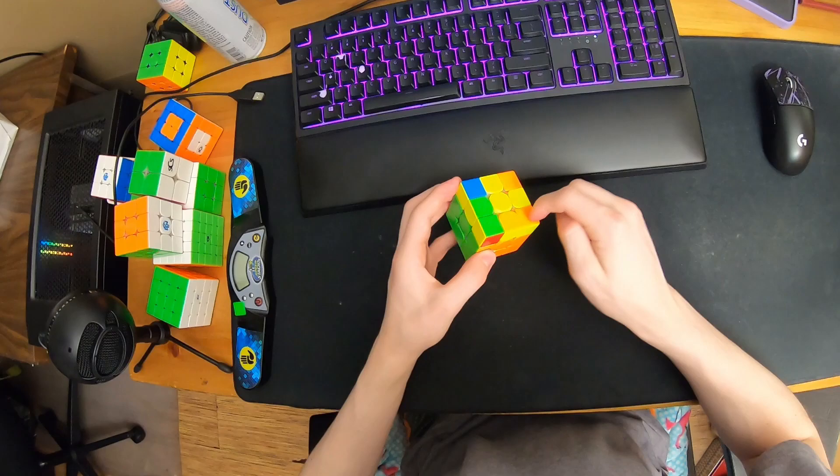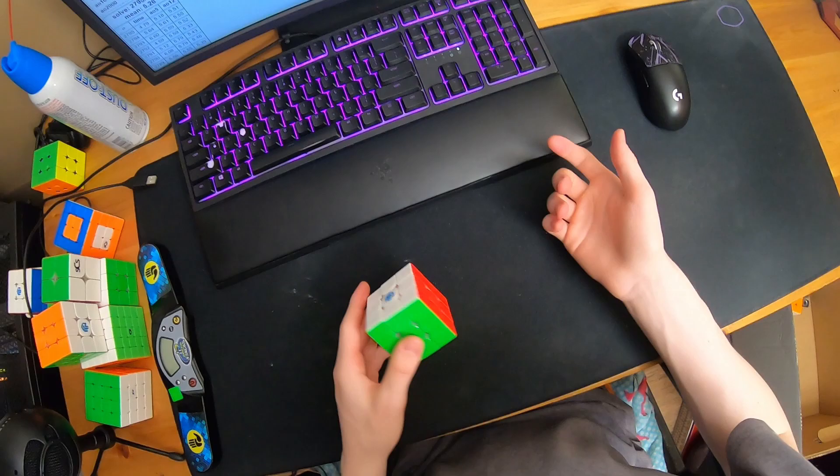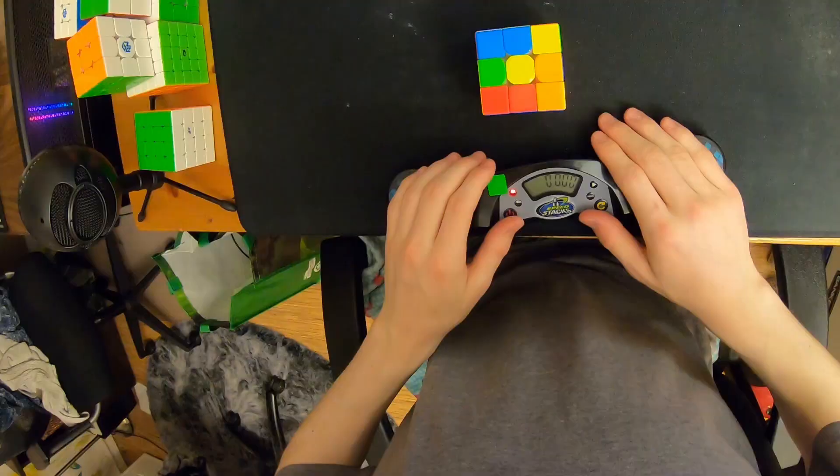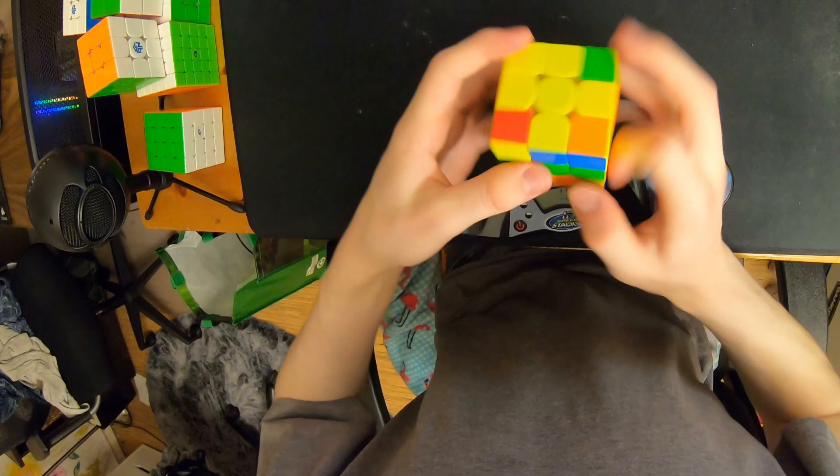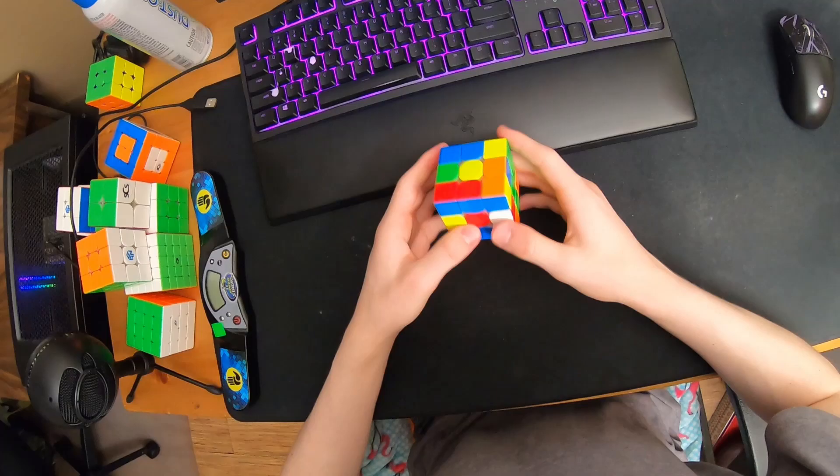It looks like a PLL skip—these are all matching. I do the algorithm D prime, AUF. That was 38 moves, so it's around 10.6 TPS.